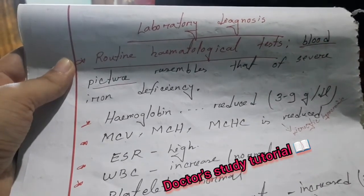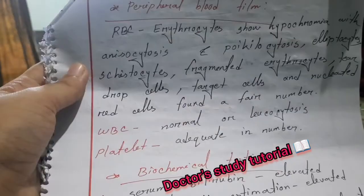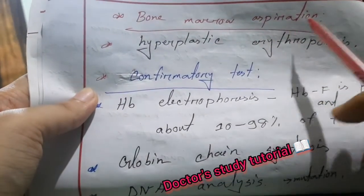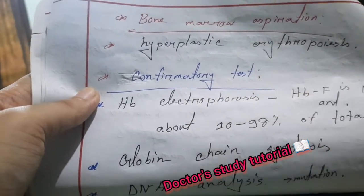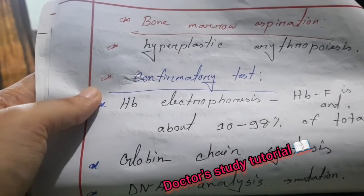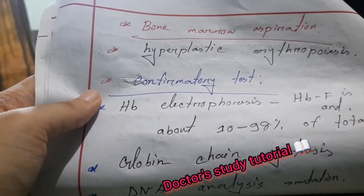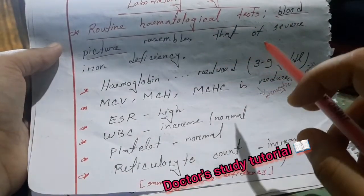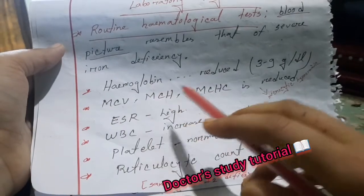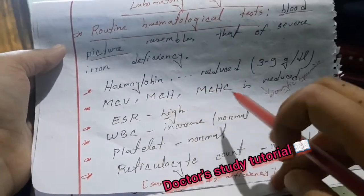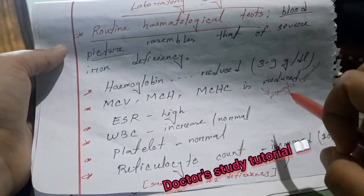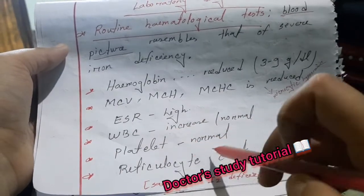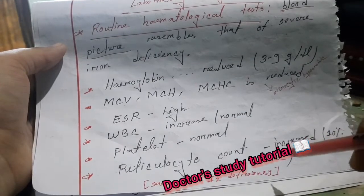Laboratory diagnosis involves several steps. First, routine hematologic tests: the blood picture resembles that of severe iron deficiency. ESR is high, WBC is increased, platelets are normal, and reticulocyte count is increased — 10% or more.